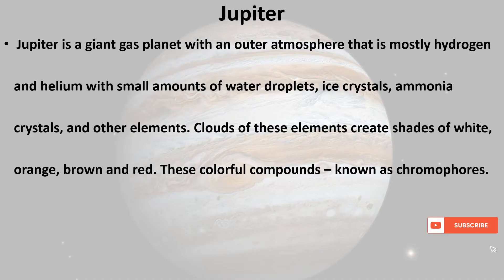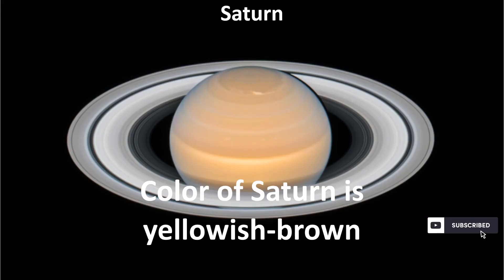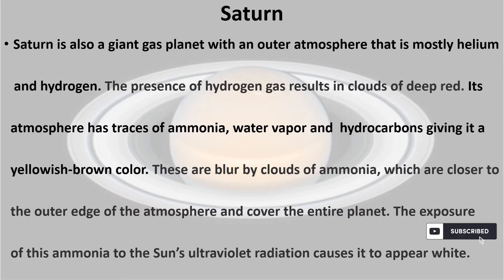The color of Jupiter is white, red, orange, brown, and yellow. Jupiter is a giant gas planet with an outer atmosphere that is mostly hydrogen and helium, with small amounts of water droplets, ice crystals, ammonia crystals, and other elements. Clouds of these elements create shades of white, orange, brown, and red. These colorful compounds are known as chromophores.